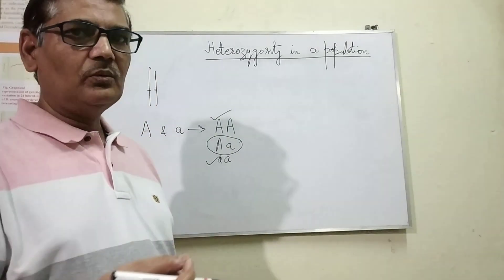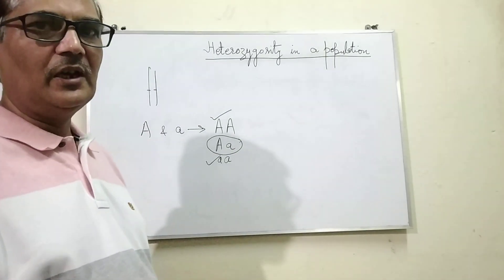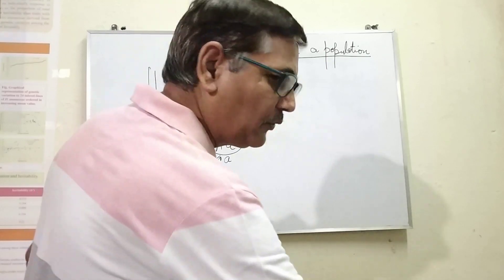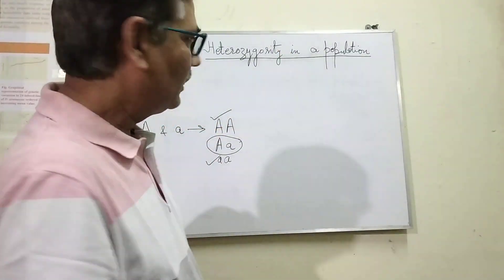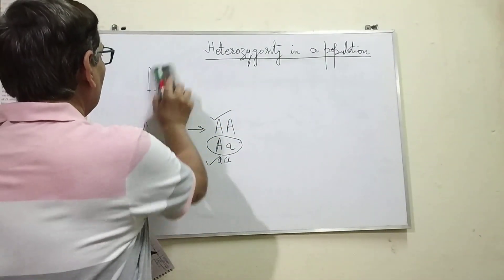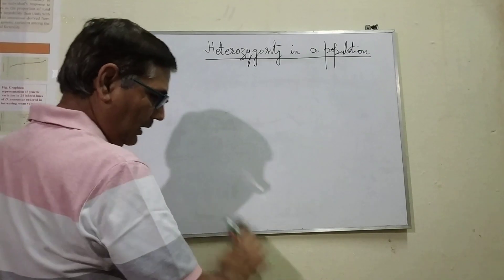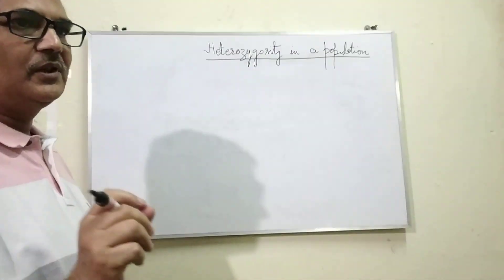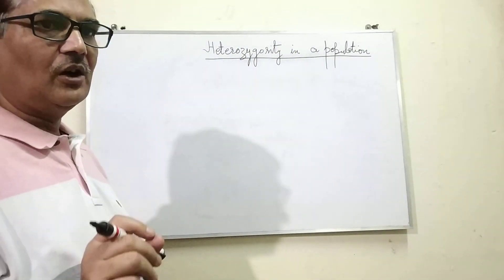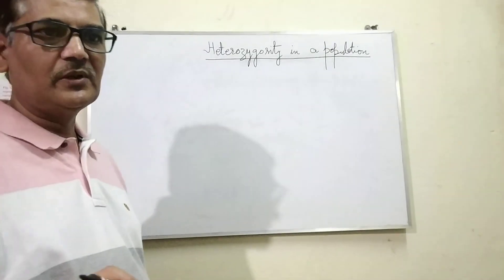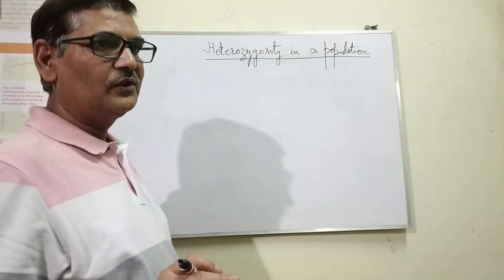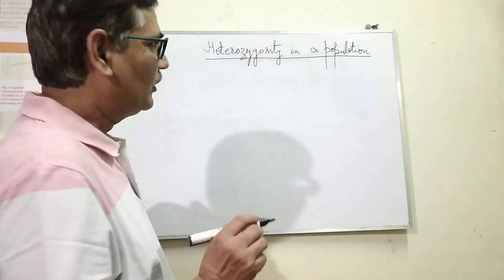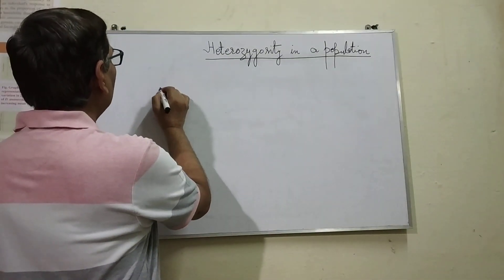How the number of individuals influences heterozygotes in a population — that we can understand and calculate. Let me take a certain example, and on the basis of that, we will see how the number of individuals present in a population influences the heterozygotes. We can measure this heterozygosity by using a formula.